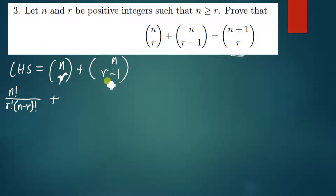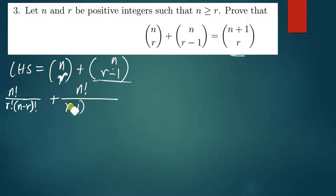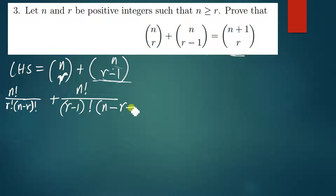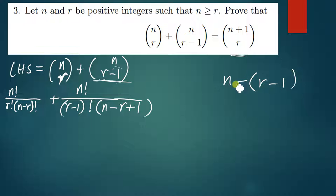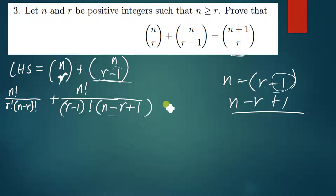Then we say plus — this part, n choose r minus one, can also be written using the same format: n factorial divided by r minus one factorial, then open brackets n minus r minus one, which simplifies to n minus r plus one factorial. The reason is because n minus open bracket r minus one close bracket gives us n minus r plus one, since negative times negative one gives us a positive one.